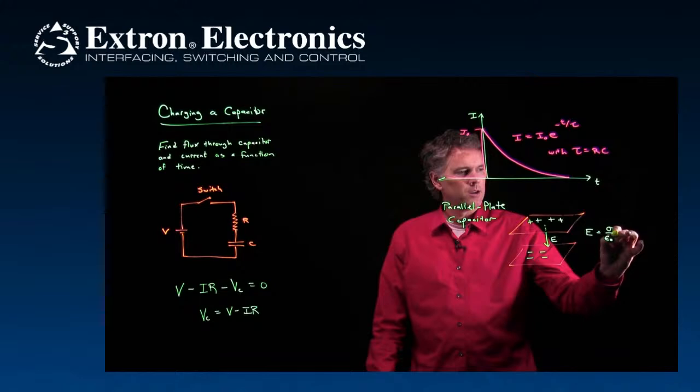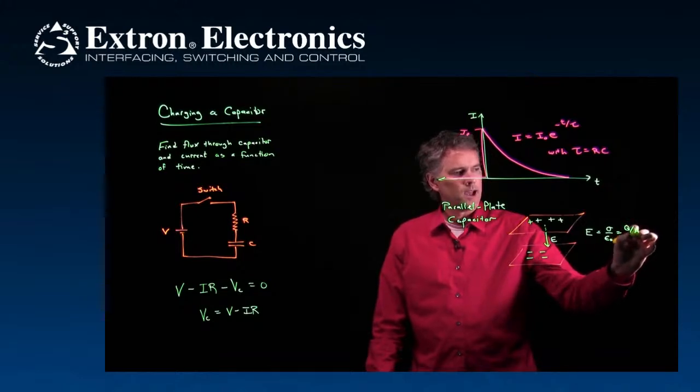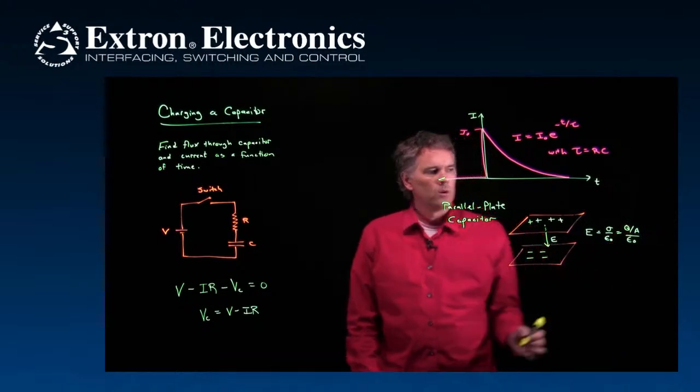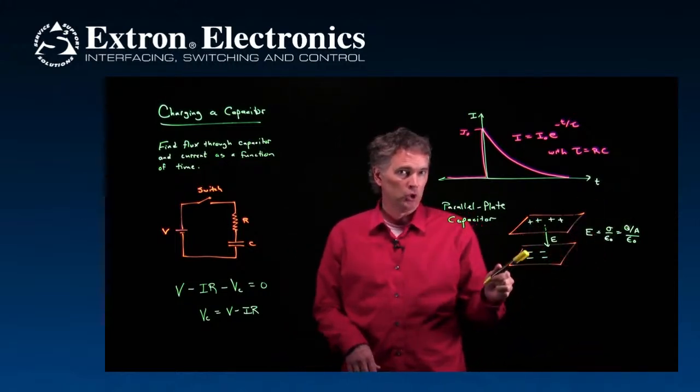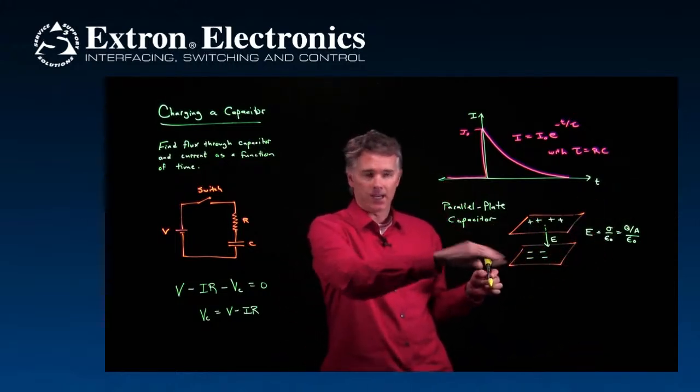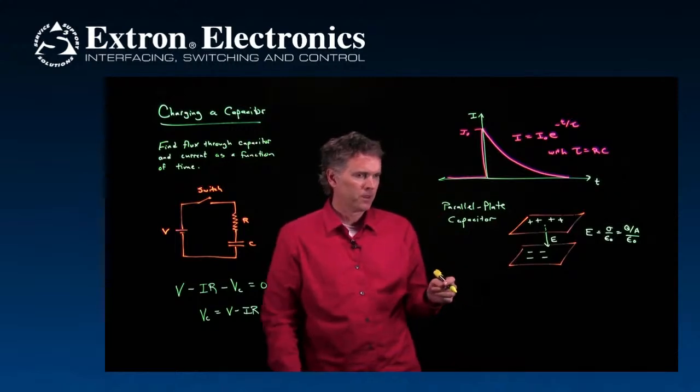But sigma is, in fact, Q over A. What is the charge on that top plate? That's what the Q is. There's obviously going to be negative Q on the bottom plate.